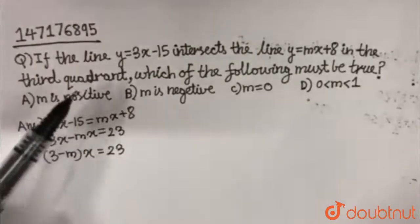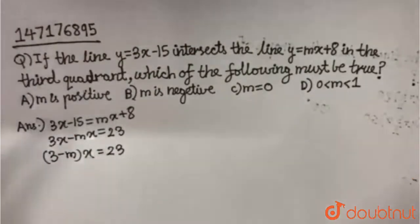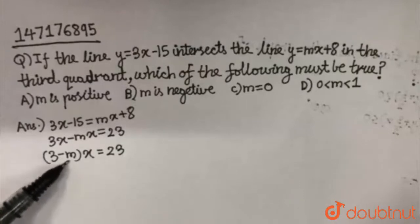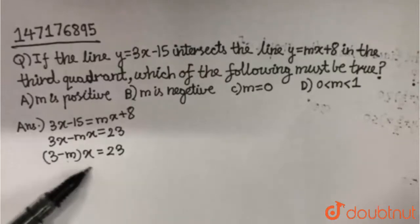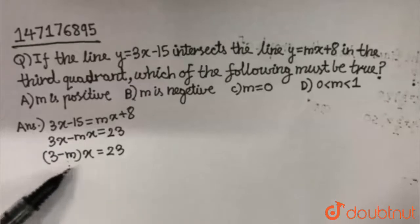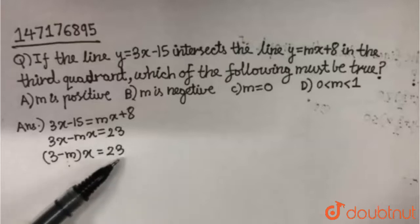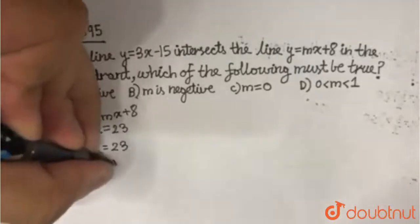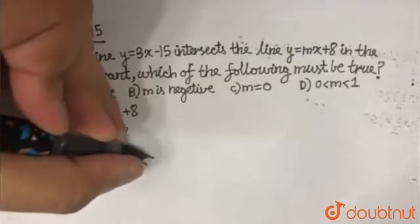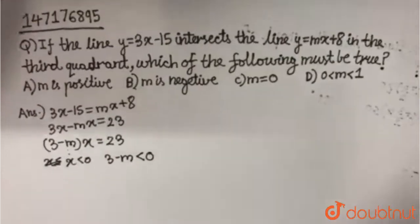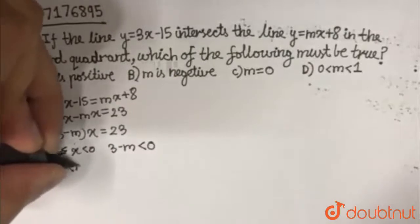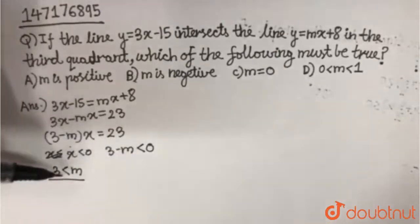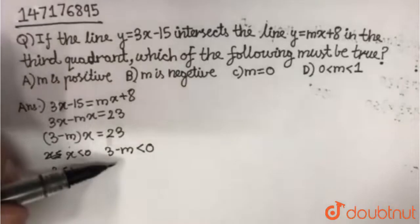Now we know that these two lines intersect in the third quadrant, so x has to be negative. If x is negative, then (3 − m) should also be negative, because only the product of two negative numbers gives a positive result. So x is less than 0, and therefore (3 − m) must also be less than 0, which means m is greater than 3.